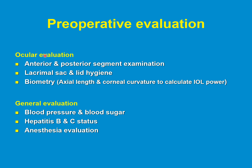The preoperative evaluation includes an ocular evaluation where we check the anterior and posterior segment of the eye to see whether the patient has any other disease, and we do tests to exclude other possible pathology. We also check the lacrimal sac and lid hygiene so that the patient doesn't get an infection after the operation. Then we do biometry — axial length and corneal curvature — to calculate the implant power. The general evaluation includes blood pressure, blood sugar, hepatitis B and C screening, and anesthesia evaluation if the cataract is done under general anesthesia, which is not very common nowadays.